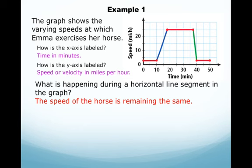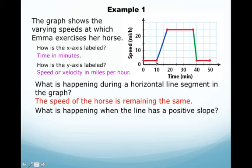And for how long is that red line? If we started at 0 and ended at 10, it's for 10 minutes. What is happening with a line of a positive slope, which is this blue line? The speed of the horse is increasing. If you look around here, we're starting about 5, 6 miles per hour, a little less than that because 5 is right here, so it's probably 3 miles per hour.